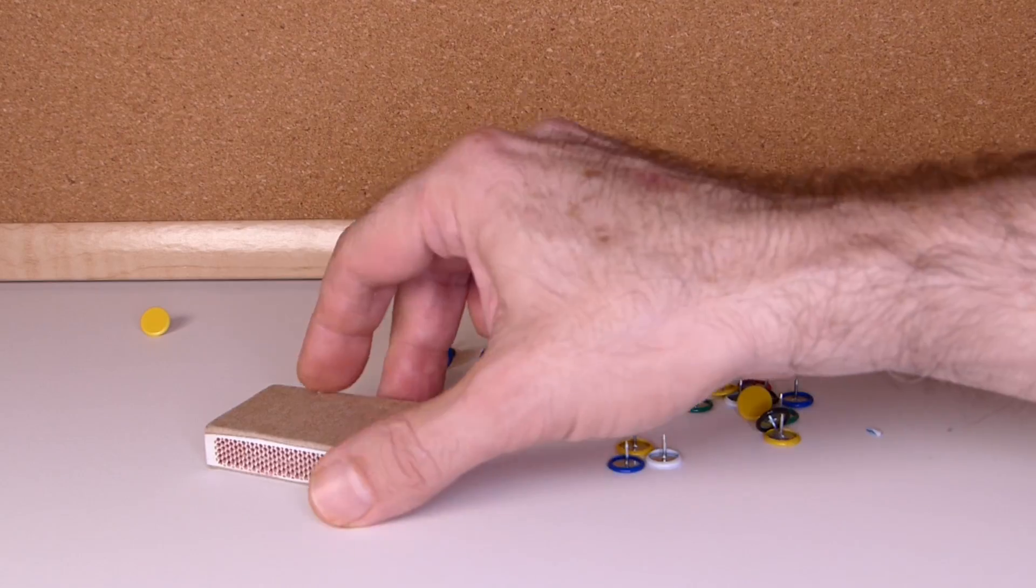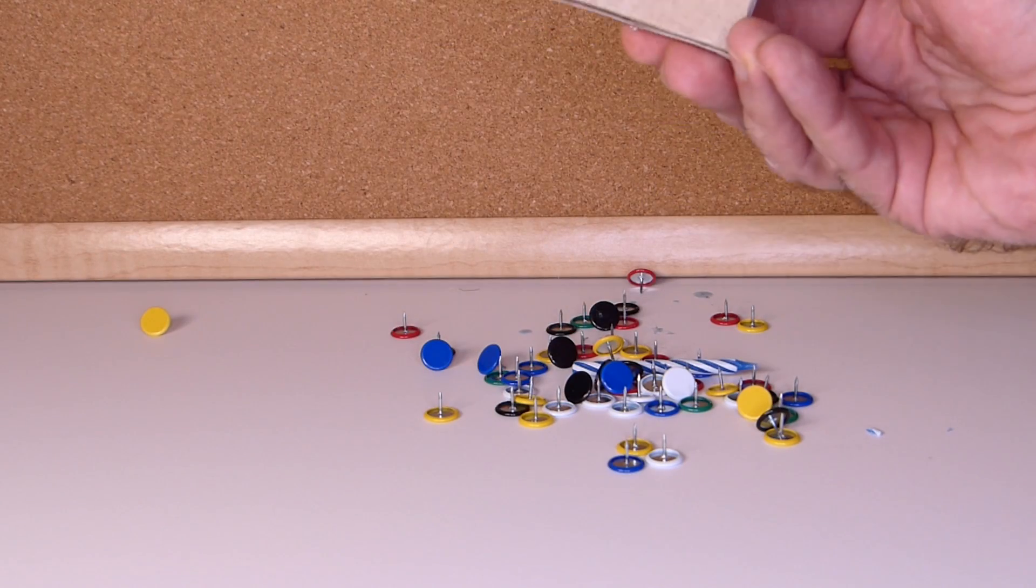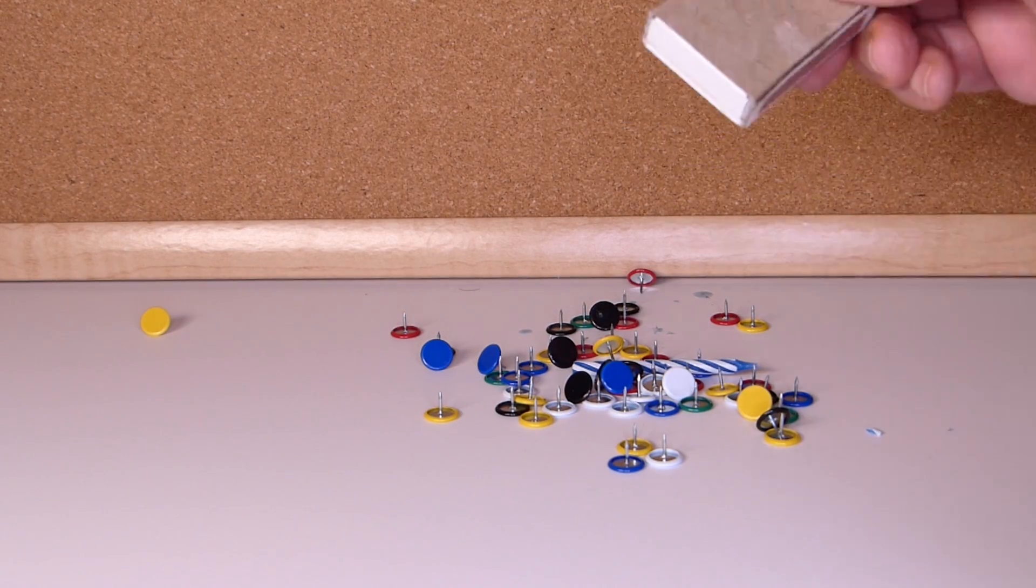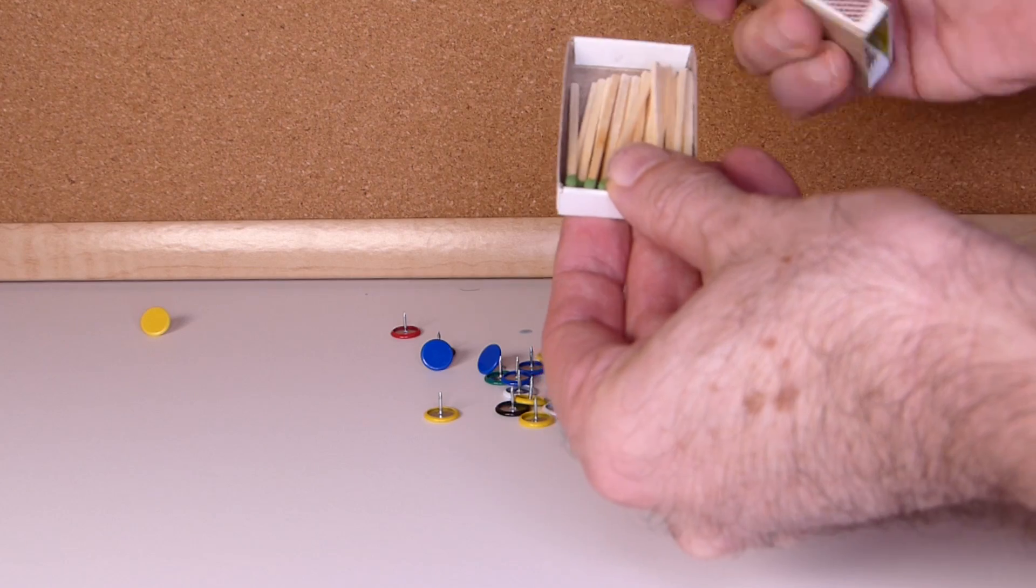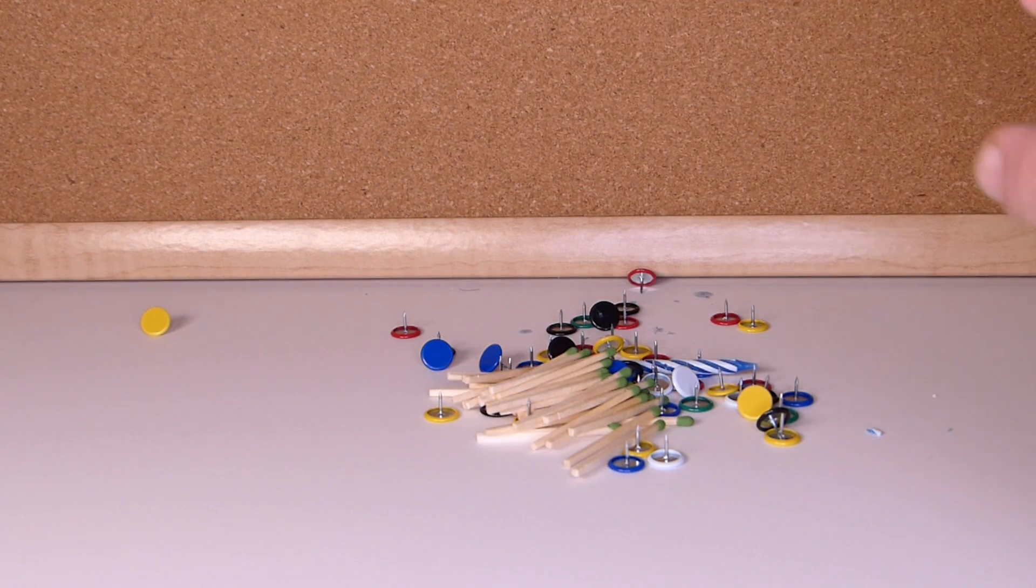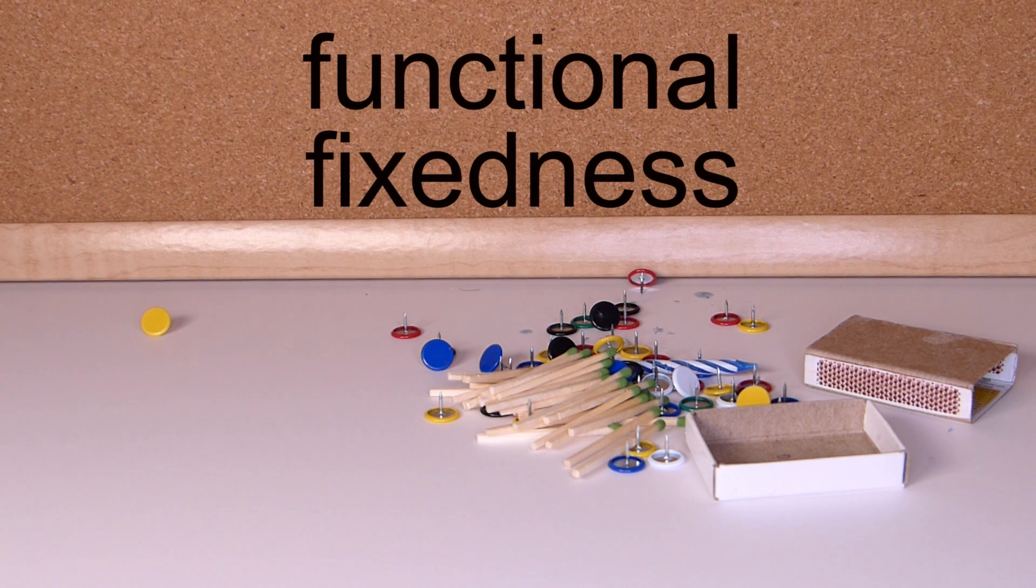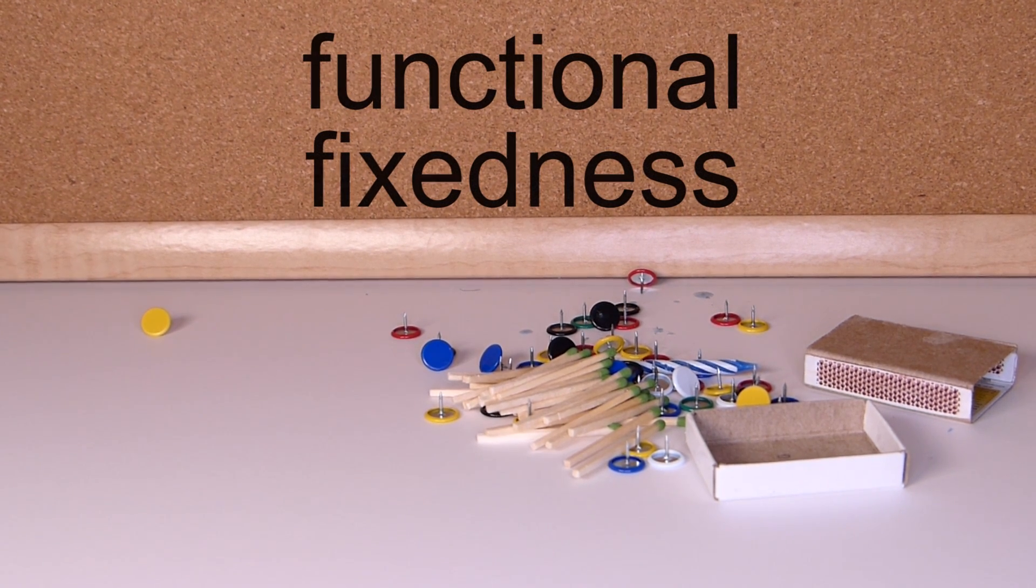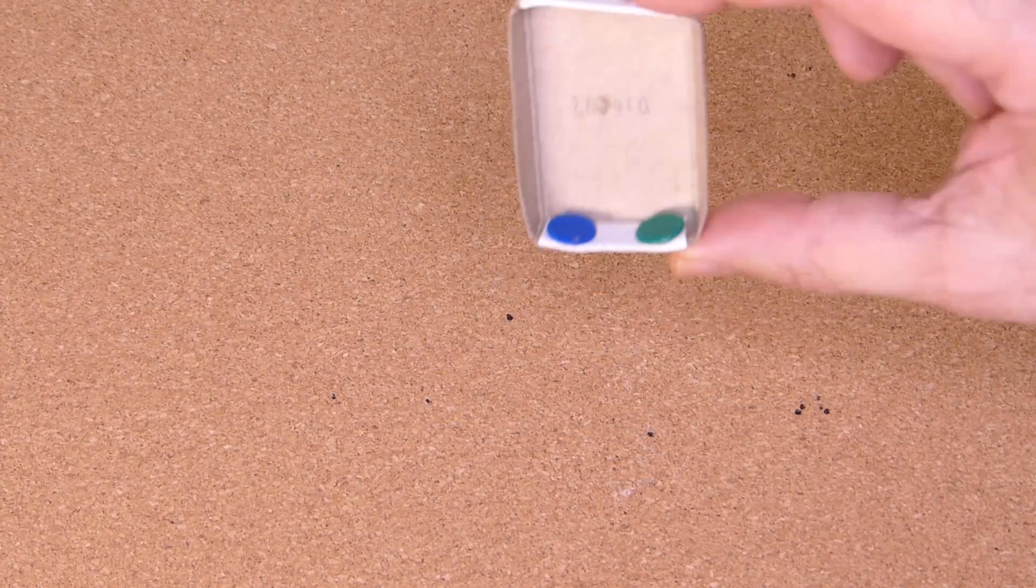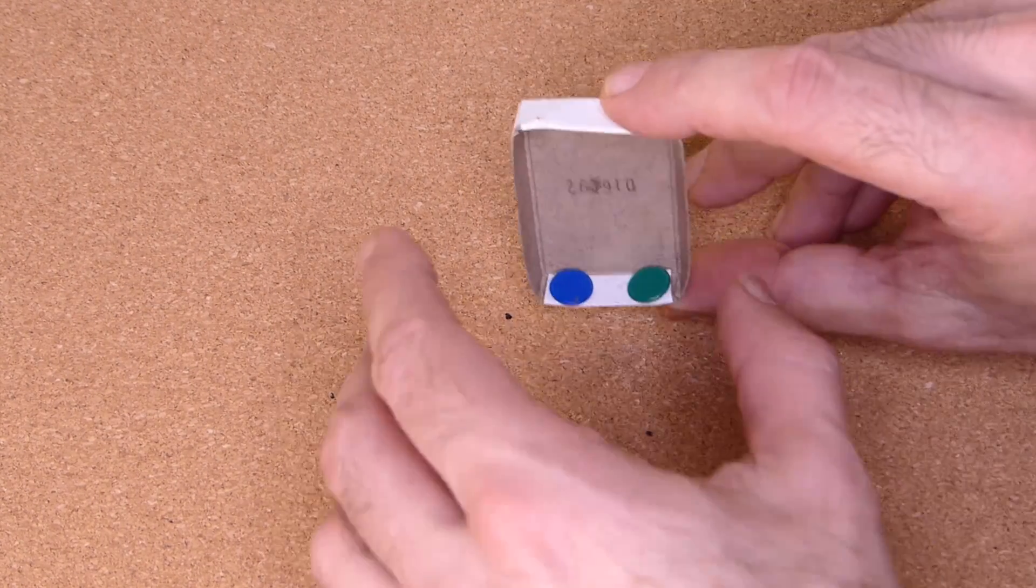The solution comes when we realize that the matchbox can be used to make a kind of shelf to hold up the candle. That is, it's not just a box, it's possibly something else. The inability to see the matchbox as a possible solution was what Dunker called functional fixedness: seeing an object as only performing one function, and not possibly doing something new.